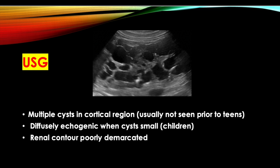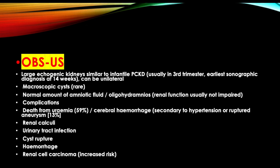On ultrasound examination, we see multiple cysts in the cortical region, usually not seen prior to teens. Diffusely echogenic when cysts are small in children. Renal contour is poorly demarcated. Obstetric ultrasound shows large echogenic kidneys, similar to infantile polycystic kidney disease, usually seen in the third trimester, earliest seen at 14 weeks. It can be unilateral. Macroscopic cysts are rare. There is normal amount of amniotic fluid or oligohydramnios. Renal function is not impaired.